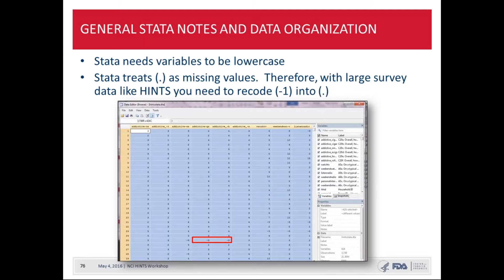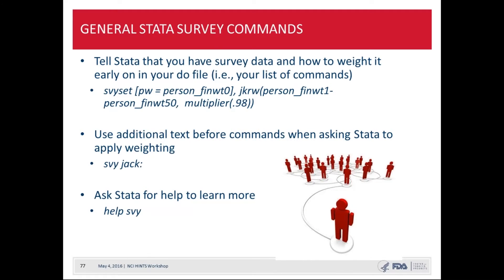These are weighted data, and this follows nicely from Dr. Moser's presentation on how to tell Stata to use jackknife replicate weights. In Stata you set this up with the SVY set command, basically telling Stata that whenever you use SVY as a prefix, refer back to these replicate weights. When you do subsequent commands — create a two-by-two table or run logistic regression — you use SVY jack. The default in Stata is Taylor linearization, so just typing SVY wouldn't work with HINTS data. Make sure to include jack. Stata's help SVY command is a great resource.